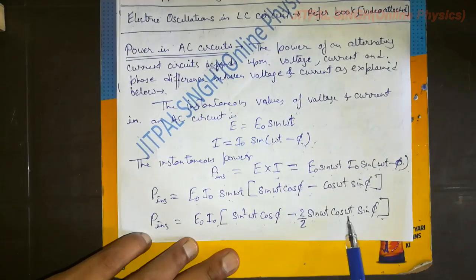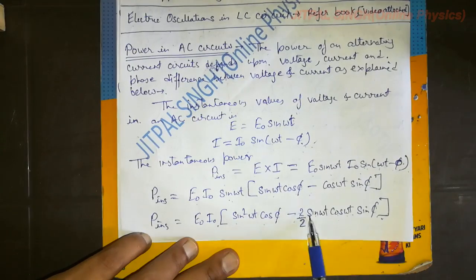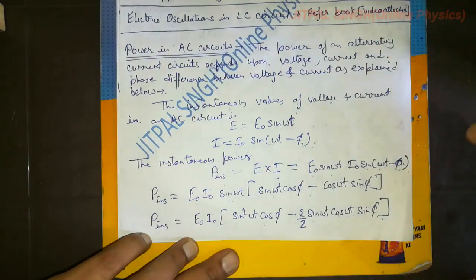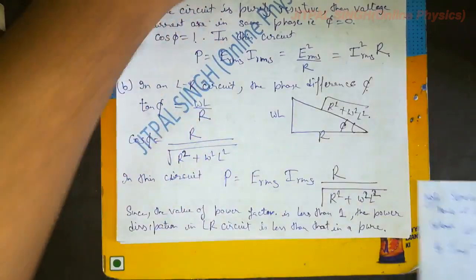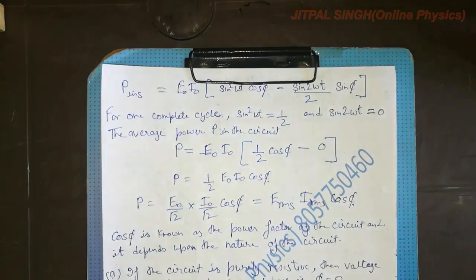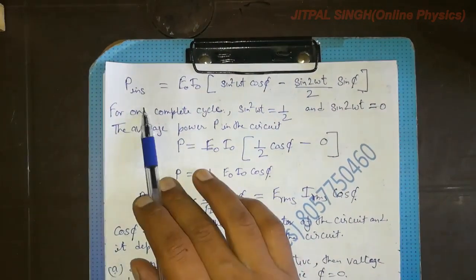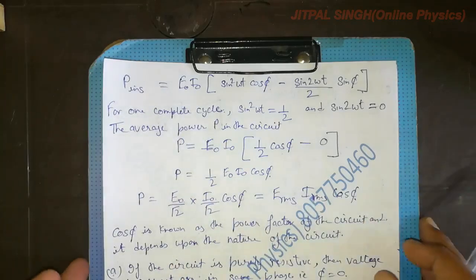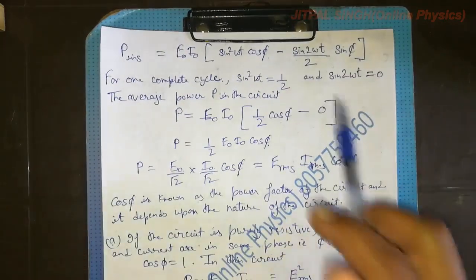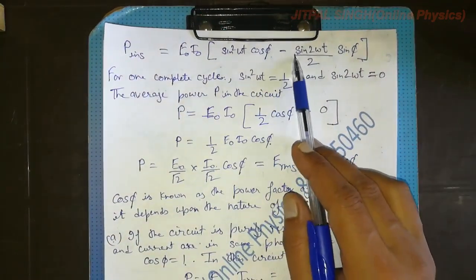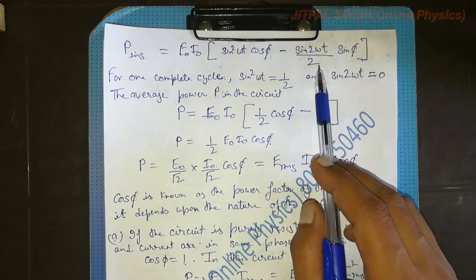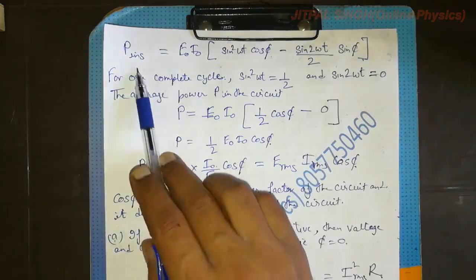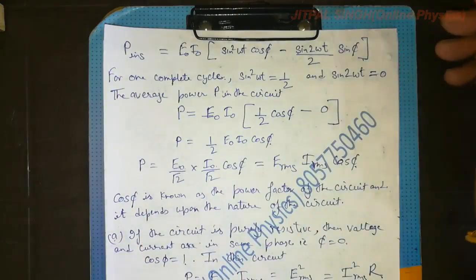Non-math students, please listen carefully: 2 sin(ωt)cos(ωt) changes to sin(2ωt), meaning double the angle. So, the instantaneous power P_inst = E₀I₀ [sin²(ωt)cos φ − (sin(2ωt) · sin φ)/2].